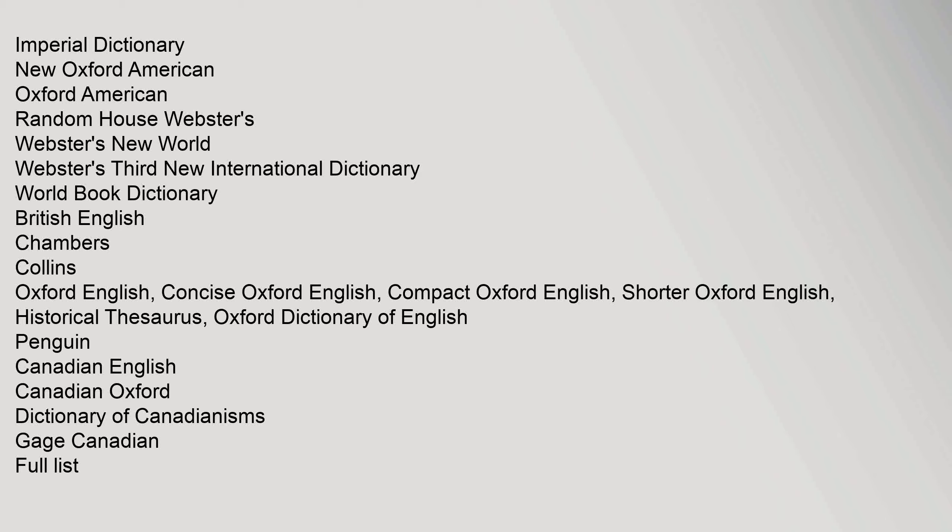Canadian English: Canadian Oxford, Dictionary of Canadianisms, Gage Canadian. Australian English: Australian National, Australian Oxford, Macquarie. Online: Wiktionary, Collaborative International Dictionary of English, OmegaWiki, Urban Dictionary, Wardnik. Learners/ESL: Cambridge Advanced Learners, Collins Cobuild Advanced, Longman Dictionary of Contemporary English, Macmillan English Dictionary for Advanced Learners, Merriam-Webster's Advanced Learners, Oxford Advanced Learners.